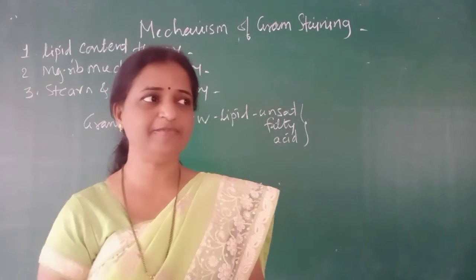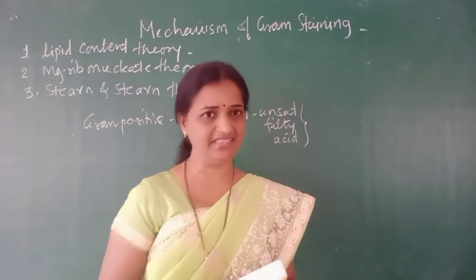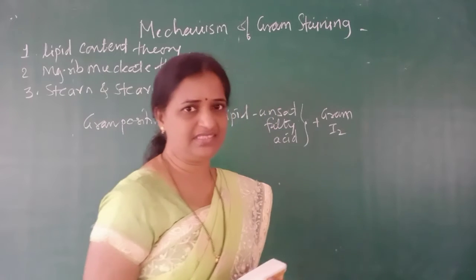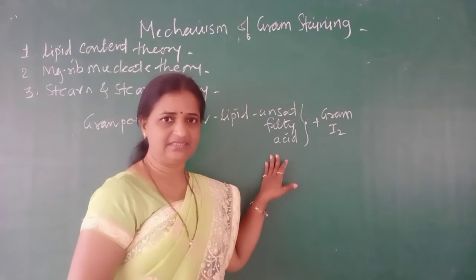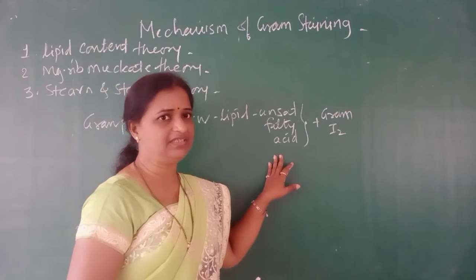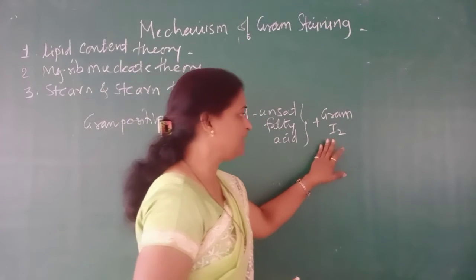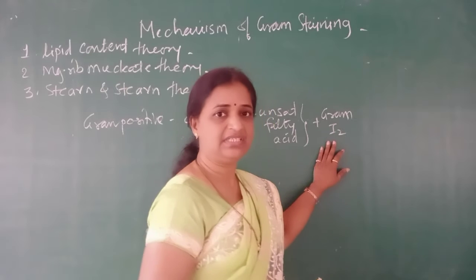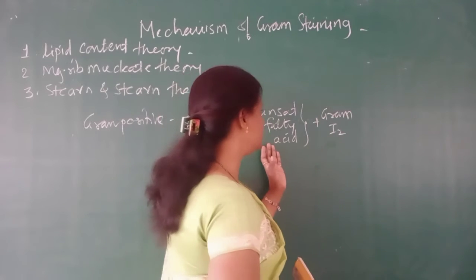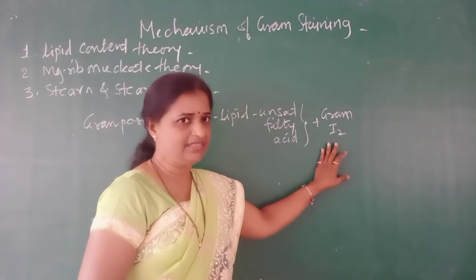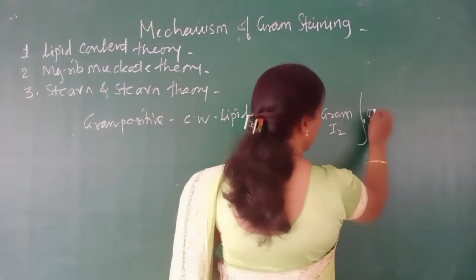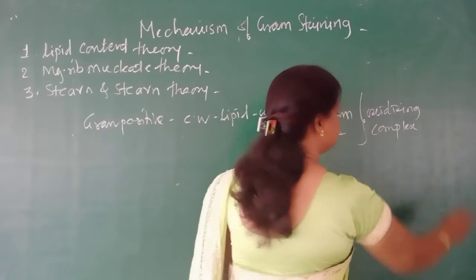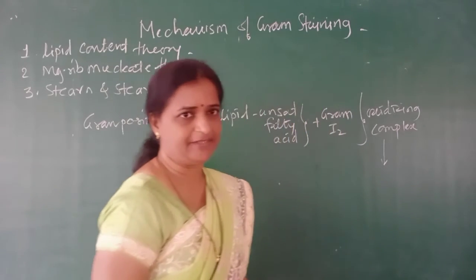As you know, during the second step of Gram staining we apply Gram's iodine as a mordant. Iodine is an oxidizing agent. The higher percentage of unsaturated fatty acids in Gram positive bacteria have an affinity towards this oxidizing agent. So these unsaturated fatty acids get attracted towards the iodine, and an oxidizing complex is formed. This complex has more affinity towards the basic dye.